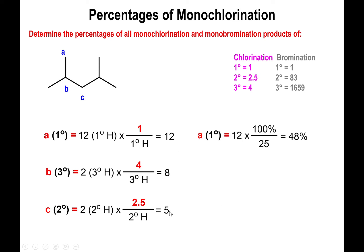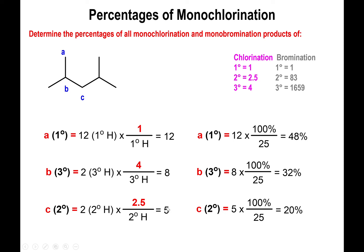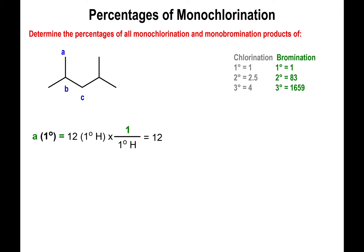Now that we have the relative rates in consideration with the number of hydrogens of each type, all we have to do is add these numbers together: 12 plus 8 plus 5 is 25, and that's the total relative rate. So we divide each individual rate by the total. The relative rate of A was 12, so 12 divided by 25 times 100 gives 48%. Take the relative rate of B, 8, divided by 25 times 100, and we get 32%. For C, take 5 divided by 25 times 100, and you get 20%.